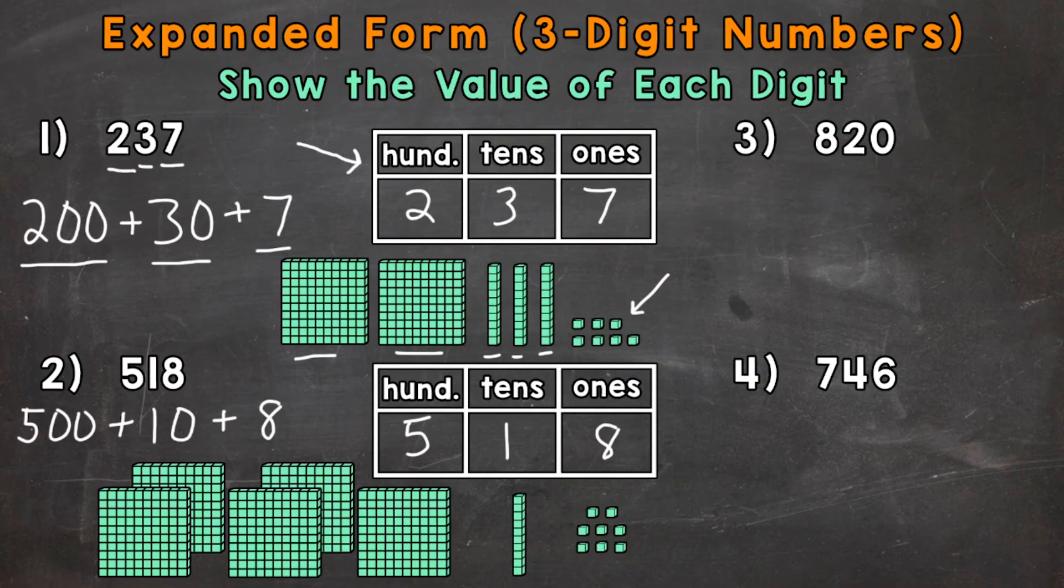So again we want to start with the greatest valued digit, so the digit furthest to the left, this 8 right here. Now that 8 is in the hundreds place. So it represents eight groups of 100, which has a value of 800. So we'll start with 800. And then move to the 2, which is in the tens place, representing two groups of 10, which has a value of 20.